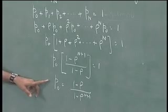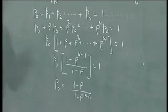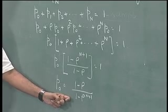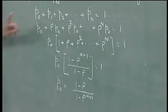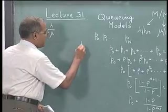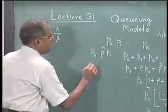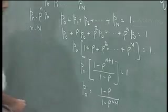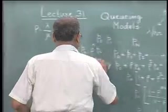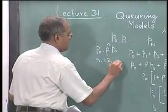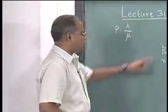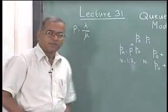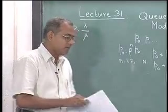The expression for P0 changes. Earlier it was only 1 minus rho; now it is 1 minus rho divided by 1 minus rho to the power N plus 1. The moment the expression for P0 changes, the expression for a general Pn becomes rho to the power n times P0, for n equal to 1 to N. We can use this to find probabilities for any number of people in the system. The rest of the equations are similar, and we need to derive expressions for Ls, Lq, Ws and Wq.